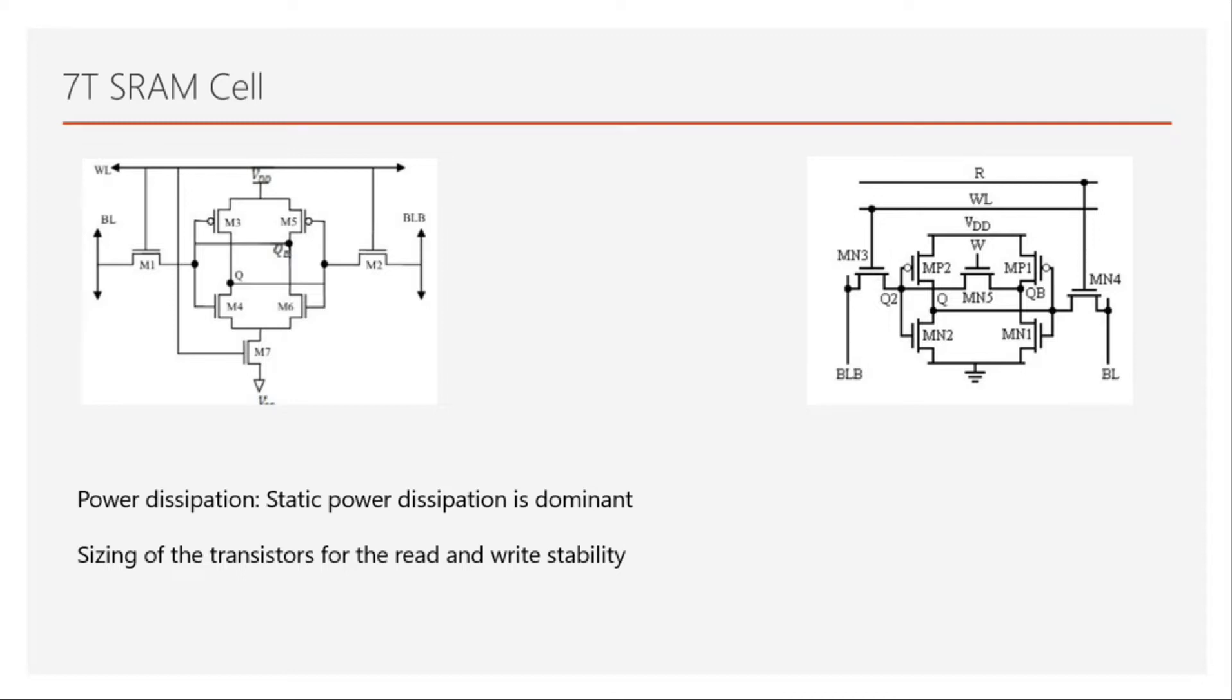As you can see in this figure, there are two types of 7T cells which I have shown. Where is the extra transistor that we have added? One as you can see over here which is just below the inverter, and also one more over here. This is one more different configuration.